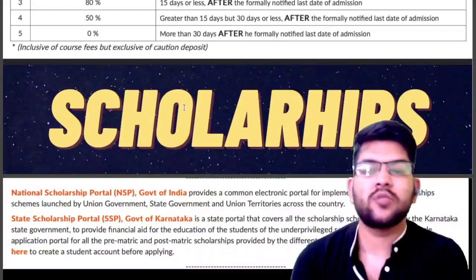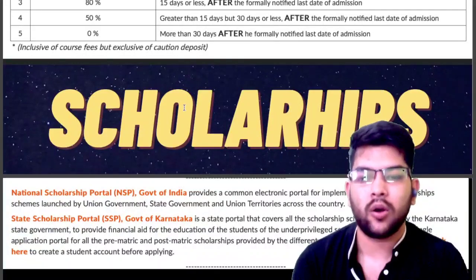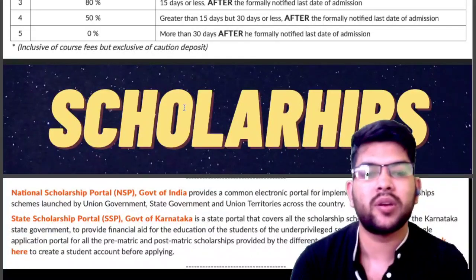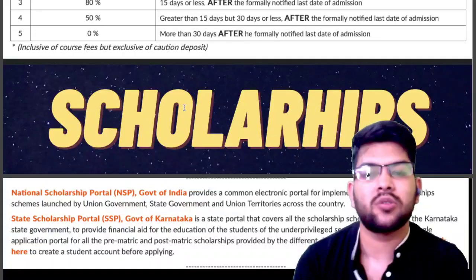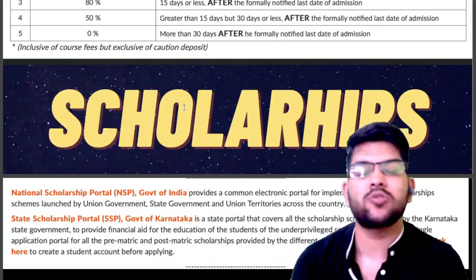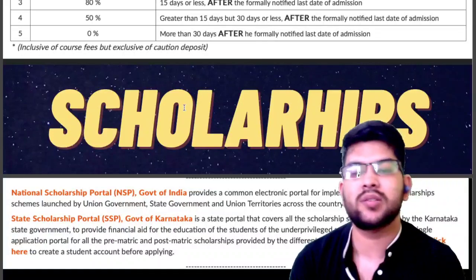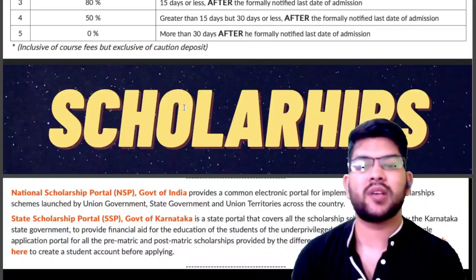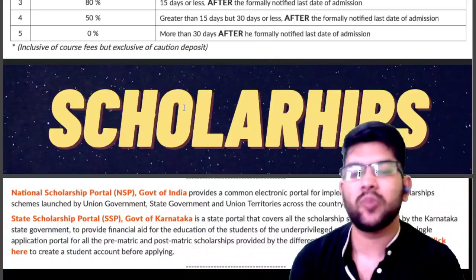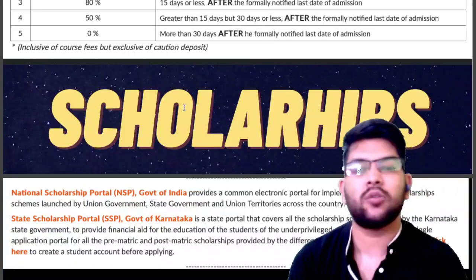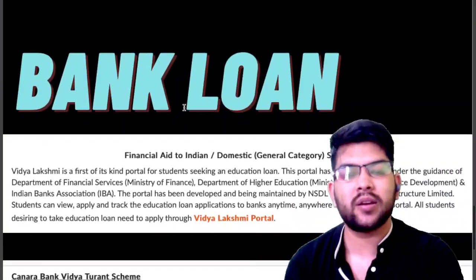The Achiever scholarship starts from the second year onwards. In addition, there is a national scholarship portal provided by the Government of India with different scholarships based on your category. Your state government may also provide scholarships. For Karnataka students, there is the SSP (State Scholarship Portal) provided by the Government of Karnataka, so Karnataka students will get additional benefit from that.